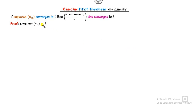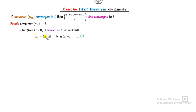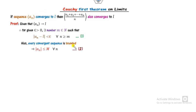Let a_n be a sequence which converges to l. By the definition of a convergent sequence, for every epsilon greater than 0, there exists a natural number m such that |a_n − l| is bounded. We also know that a convergent sequence is bounded, and we use that definition here.